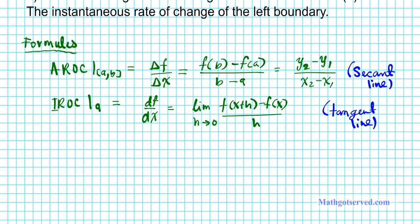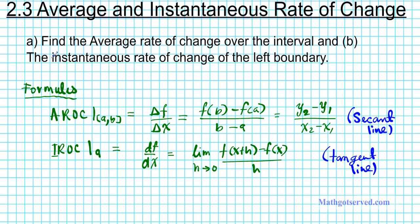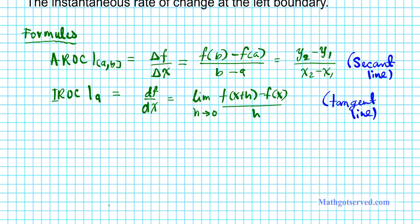So let's take a look at an example. Example number one. The instructions are provided here. We're to find the average rate of change over the given interval, and then we have to compute the instantaneous rate of change at the left boundary. So let's start with question 1.